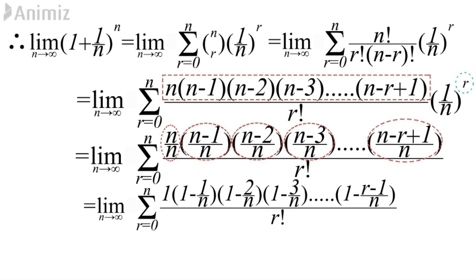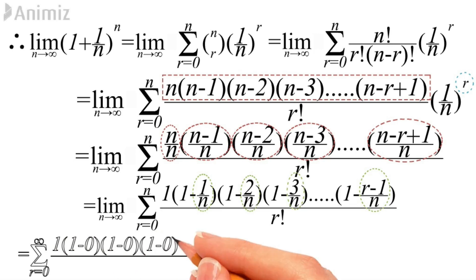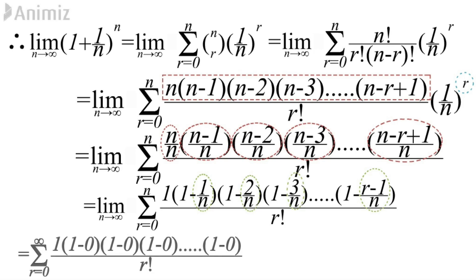Applying the limit: as n→∞, the sum's upper limit goes from n to infinity. We know that any finite number divided by n tends to 0, so 1/n, 2/n, 3/n, up to (r-1)/n all become 0. The sum becomes Σ of 1·(1-0)·(1-0)·...·(1-0) divided by r factorial — and 1 minus 0 is nothing but 1.